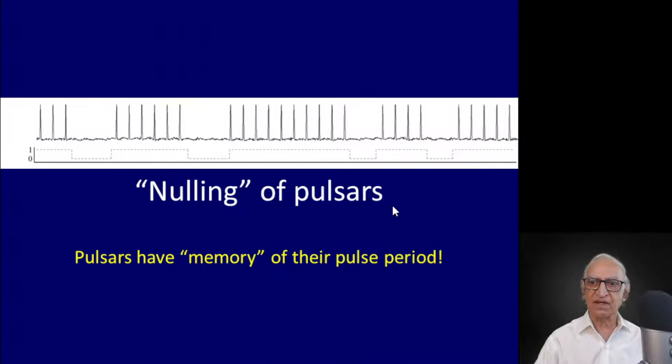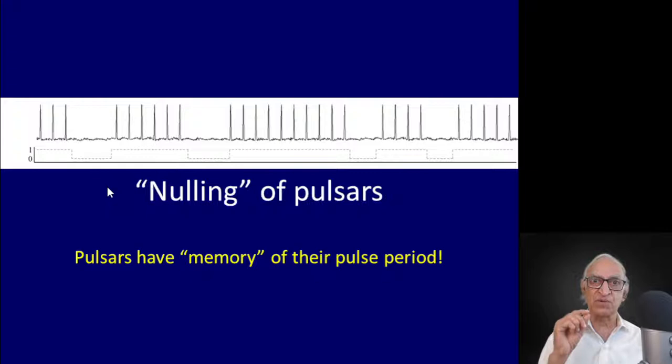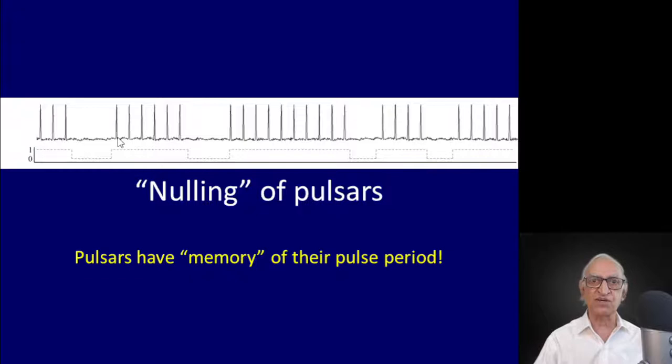Pulsars sometimes switch off — they null. Remarkably, sometimes they null for 8 hours, 10 hours, 12 hours, and when the pulses reappear, the neutron star seems to remember precisely the phase of the pulse, so that the pulse reappears exactly where it should have appeared in time. Why this memory exists is still not fully understood. This phenomenon of nulling is true of many pulsars. It used to be thought these were signs of a pulsar about to die, but that is no longer the prevailing view.